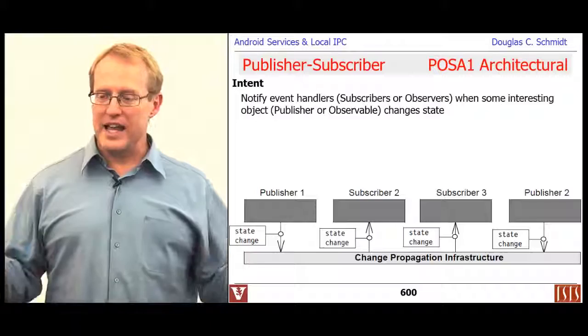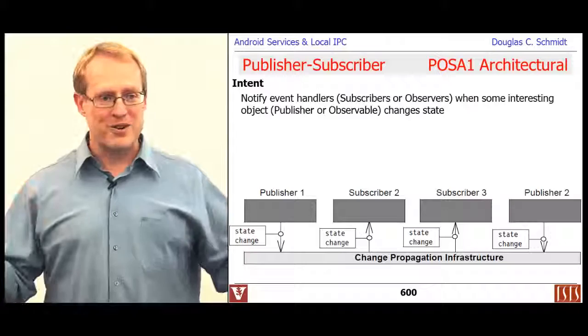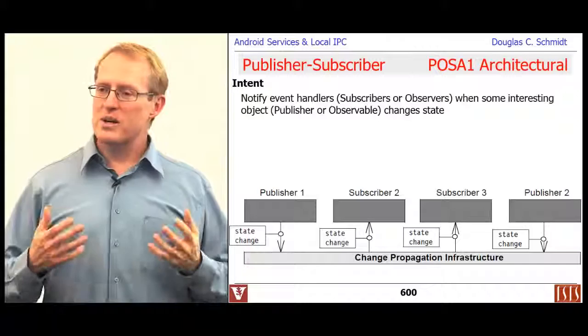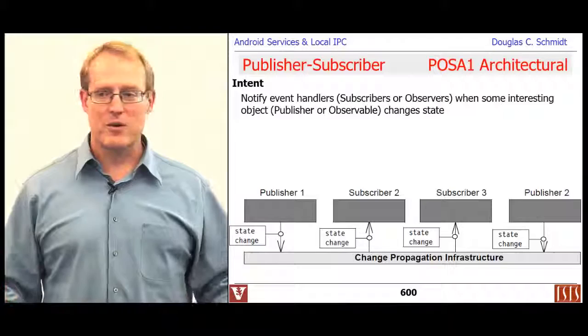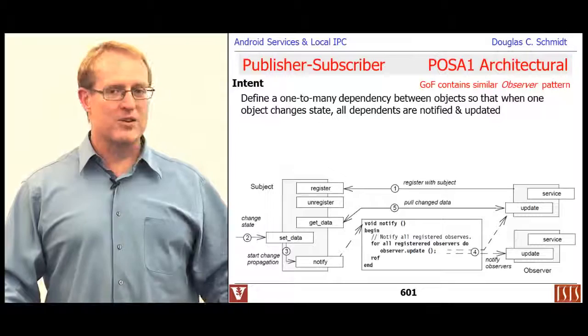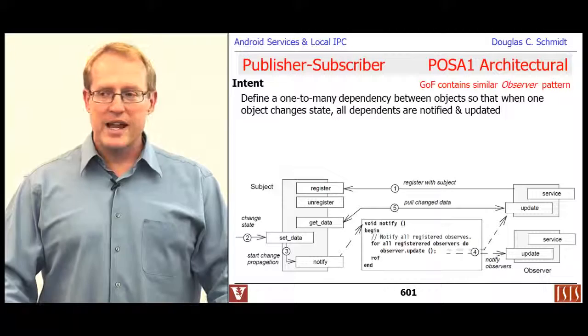The intent of this pattern is to notify event handlers — subscribers, observers, broadcast receivers, whatever you call them — when something interesting happens based on publishers or observables or subjects, when somebody's state changes like the battery becoming low. When an interesting state change occurs, you want to notify interested subscribers. There's also a gang-of-four pattern very similar, though not identical: the observer pattern, which defines a one-to-many dependency so when one object changes state, all dependents are notified.